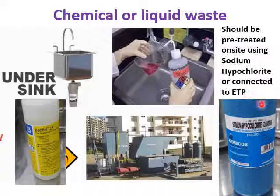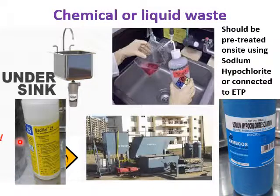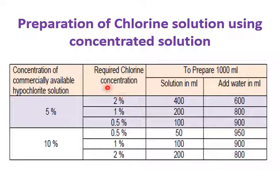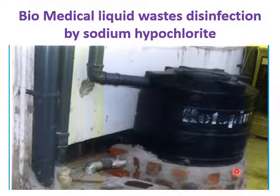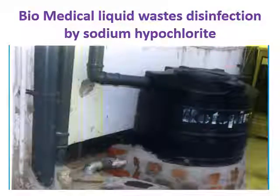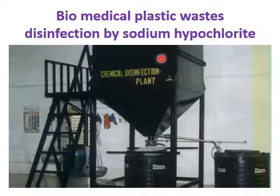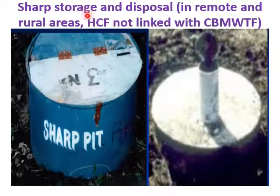The hydroclave uses microwave technology — water within the waste is rapidly heated by microwaves and infectious components are destroyed by heat conduction. Plasma pyrolysis is another treatment method. Chemical and liquid waste should be pre-treated on site using 1–2% sodium hypochlorite or connected to an effluent treatment plant. Bacillol, which contains ethanol and propanol, is also used as a disinfectant.